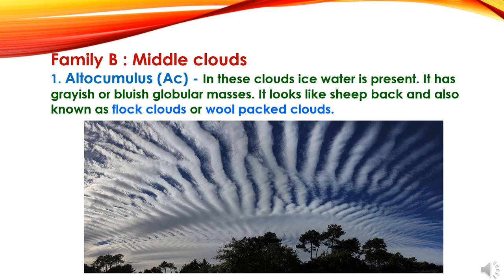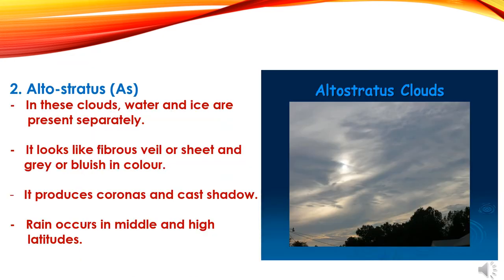Now we will study about Family B — middle clouds. The first sub-category is Altocumulus Clouds. These clouds contain ice and water. They have grayish or bluish globular masses and look like a sea bed; also known as flock clouds or wool-pack clouds. The second sub-category is Altostratus Clouds. In these clouds, water and ice are present separately. They look like a fibrous veil or sheet, gray or bluish in color. They produce coronas and cast shadows. Rain occurs in middle and high latitudes.